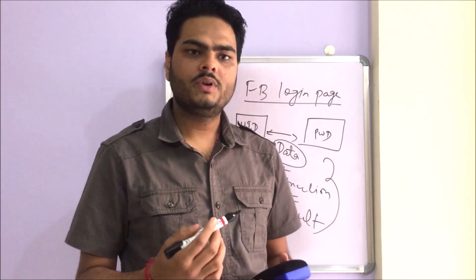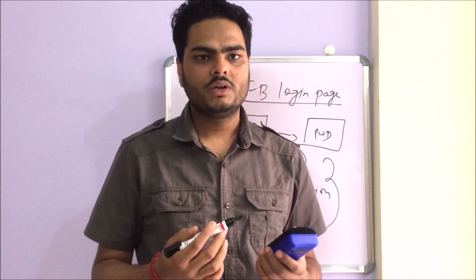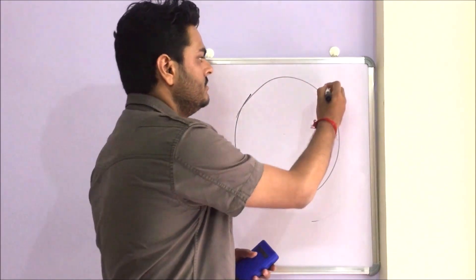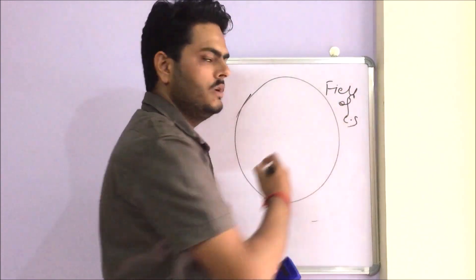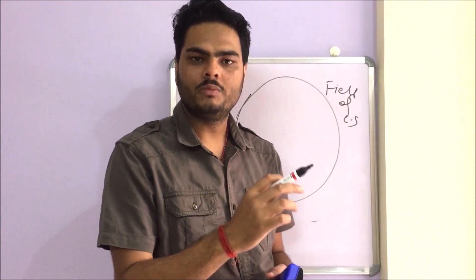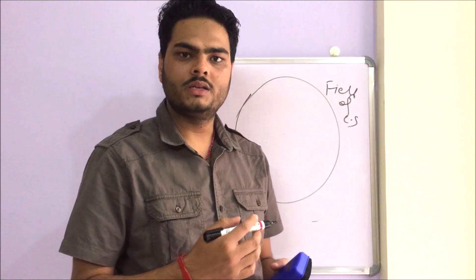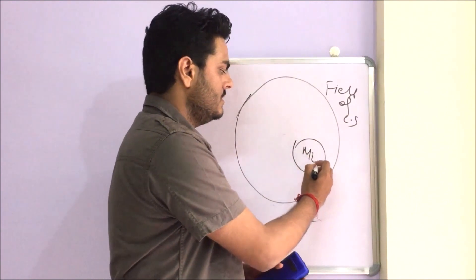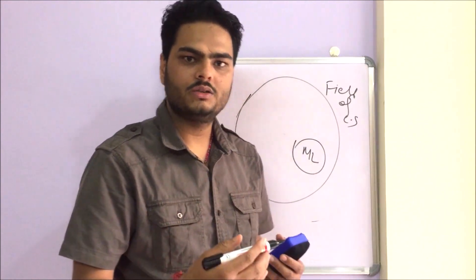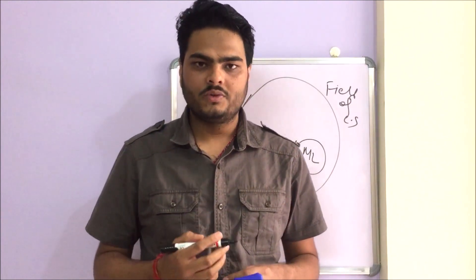So what is machine learning? There is a very big branch of computer science which talks about feeding intelligence into systems. Is there a way we can feed intelligence into computers? Of course there is, and that field of study is known as artificial intelligence. Artificial intelligence is a field of computer science which deals with feeding intelligence into computers or machines. Inside artificial intelligence, we have a separate branch called machine learning, which is a subset of AI. The simple meaning is making machines intelligent.